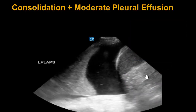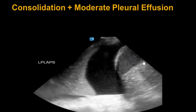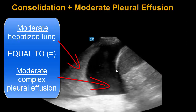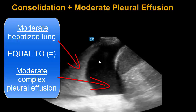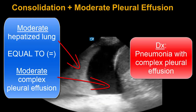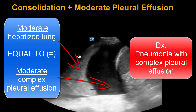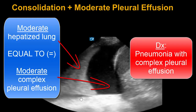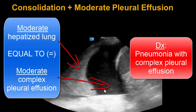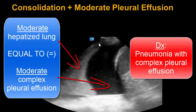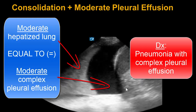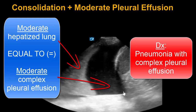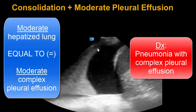To put this all into context, we have a similar sized consolidated lung compared to a similar sized pleural effusion with evidence of complexity. This would again support lung consolidation due to pneumonia as being the primary process, with a secondary complex pleural effusion. An important learning point here is that this effusion certainly needs to be drained on an urgent basis.